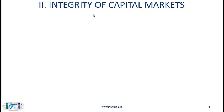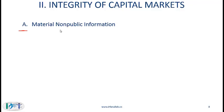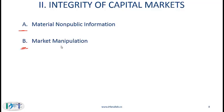Standard 2 — Integrity of Capital Markets — has two substandards. Standard 2A is Material Non-Public Information: if you possess material non-public information that could affect the value of an investment, you must not use that information to make investment-oriented decisions, and you must not cause anyone else to act on this information either. Standard 2B is Market Manipulation: you must not engage in practices that distort prices or artificially inflate trading volume with the intent to mislead other market participants.